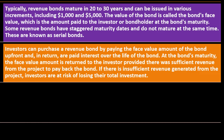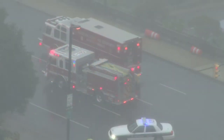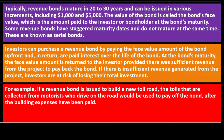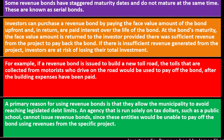If there is insufficient revenue generated from the project, investors are at risk of losing their total investment. For example, if a revenue bond is issued to build a new toll road, the tolls collected from motorists would be used to pay off the bond after building expenses have been paid. A primary reason for using revenue bonds is that they allow the municipality to avoid reaching legislated bond debt limits. An agency run solely on tax dollars, such as public schools, cannot issue revenue bonds since these entities would be unable to pay off the bond using revenues from a specific project.